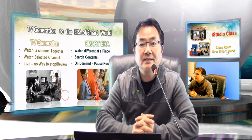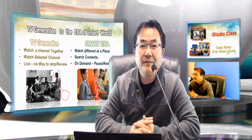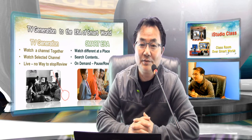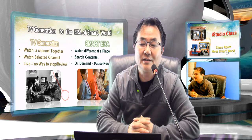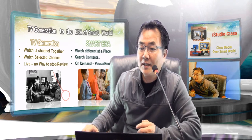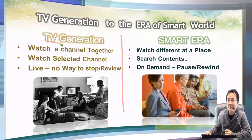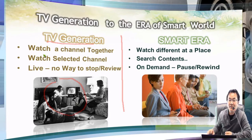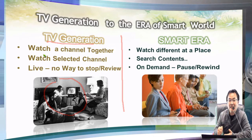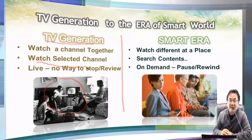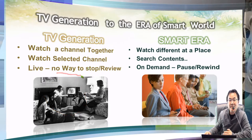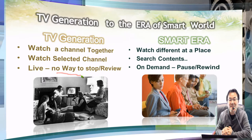I would like to explain the difference between the TV generation and the smart era we have right now. The TV generation means everybody comes to a dining room and they share the TV all together — there is no choice for many channels, only one or two channels. They select and watch all together in one place. The channel is very limited. Even with many hundreds of cable TV channels, all the channels were actually selected by the broadcaster, not by yourself. And also they cannot stop, review, rewind, or see previous content.